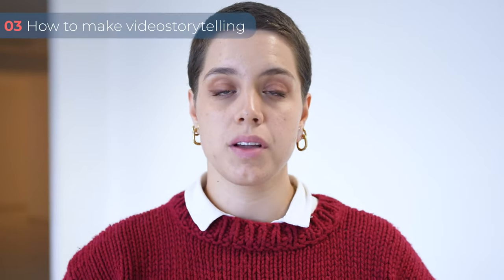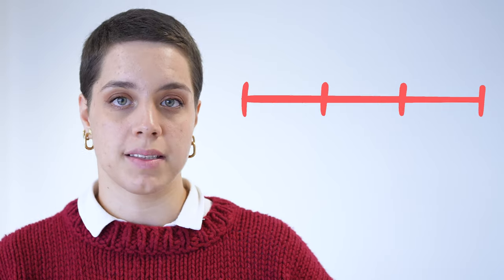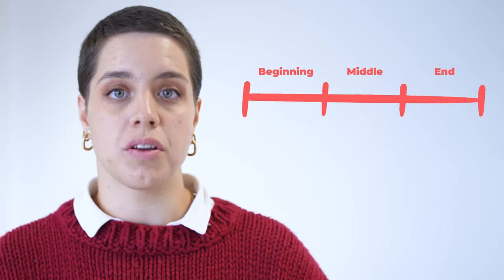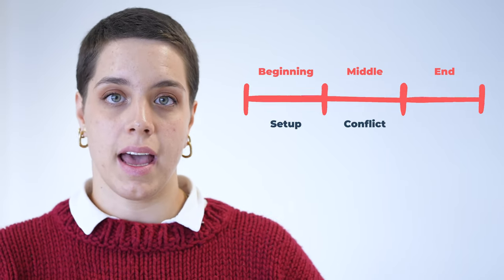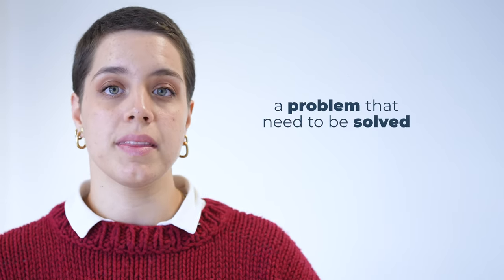We can make video storytelling in many different ways. The most common form is what we see in the plot of a story, usually divided into three acts: beginning, middle, and end — which correspond to different situations of the main character: a setup, a conflict, and the resolution. The main element is a problem that needs to be solved.